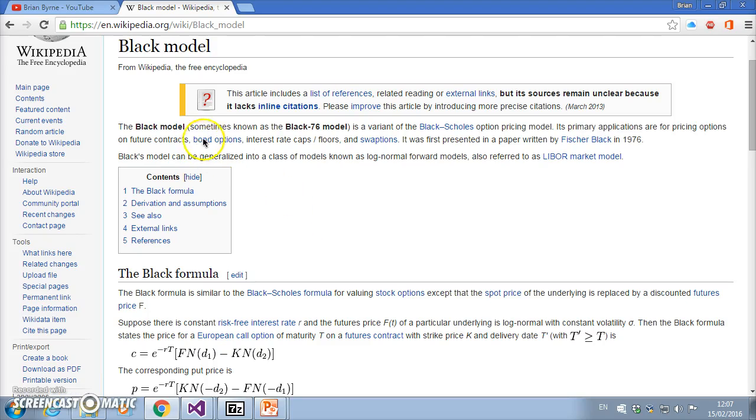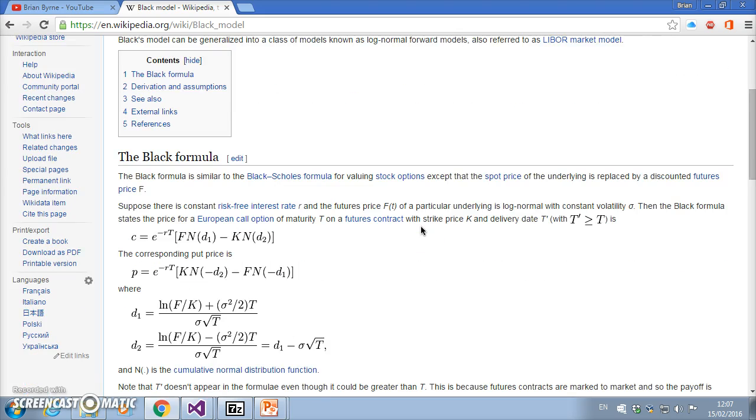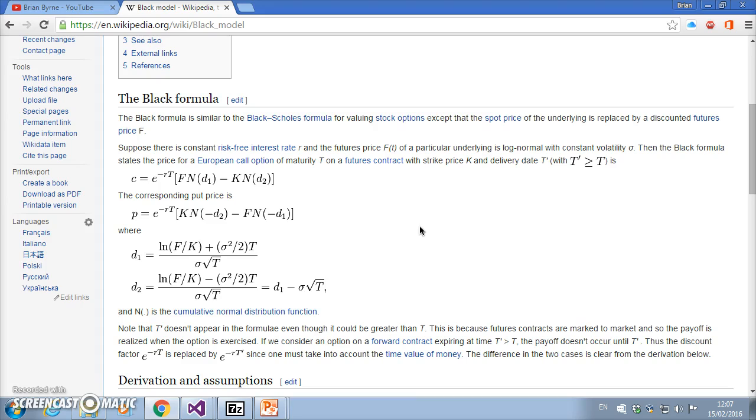I'm going to take a look at the Black model, Black 1976. It's a variant of the Black-Scholes and it's used for pricing options on future contracts mainly, but also instruments like swap options.